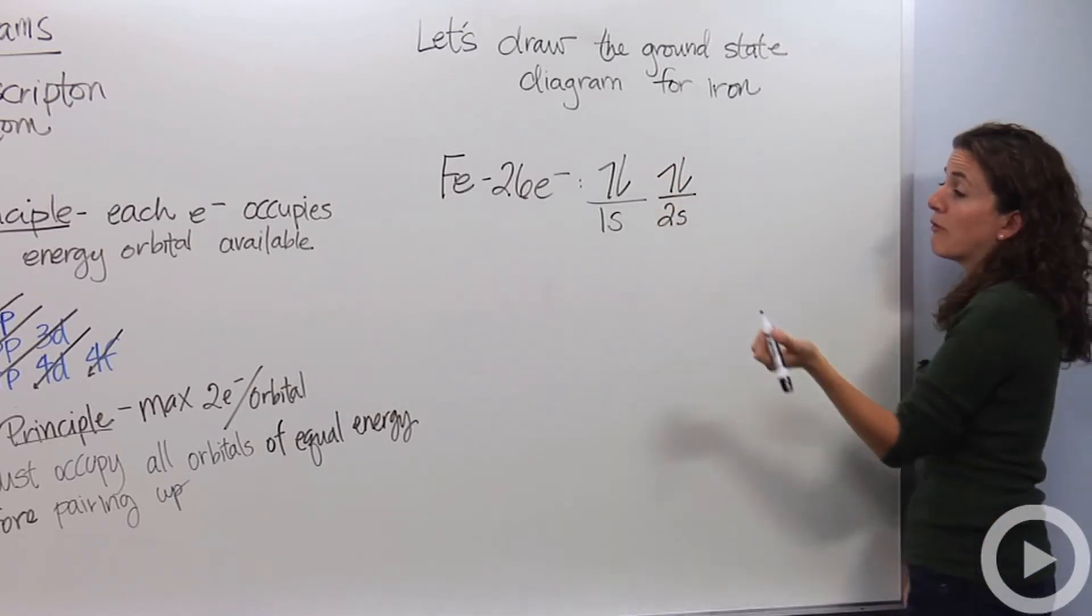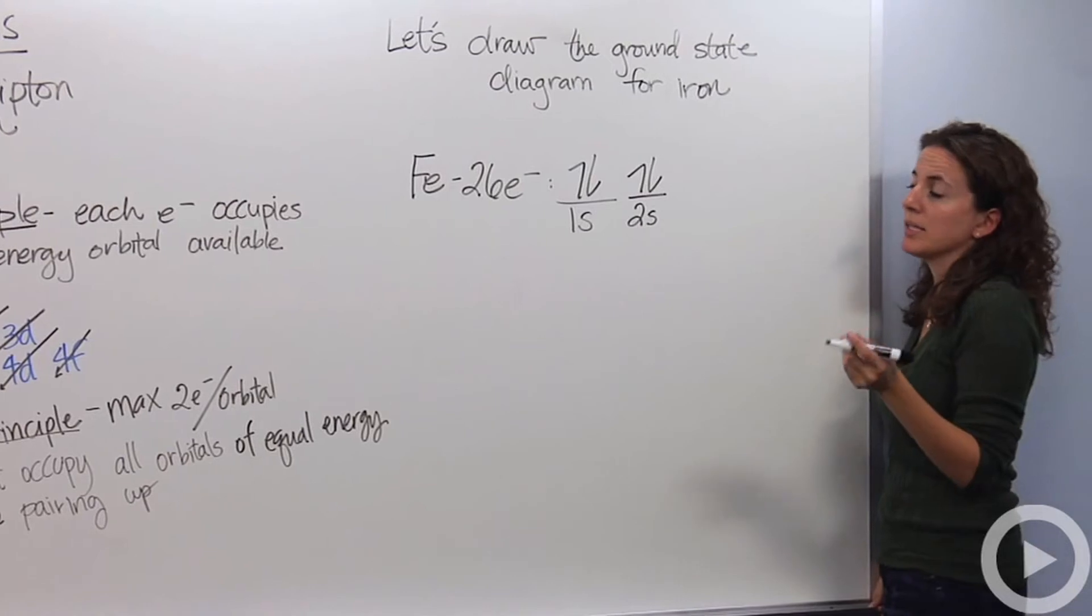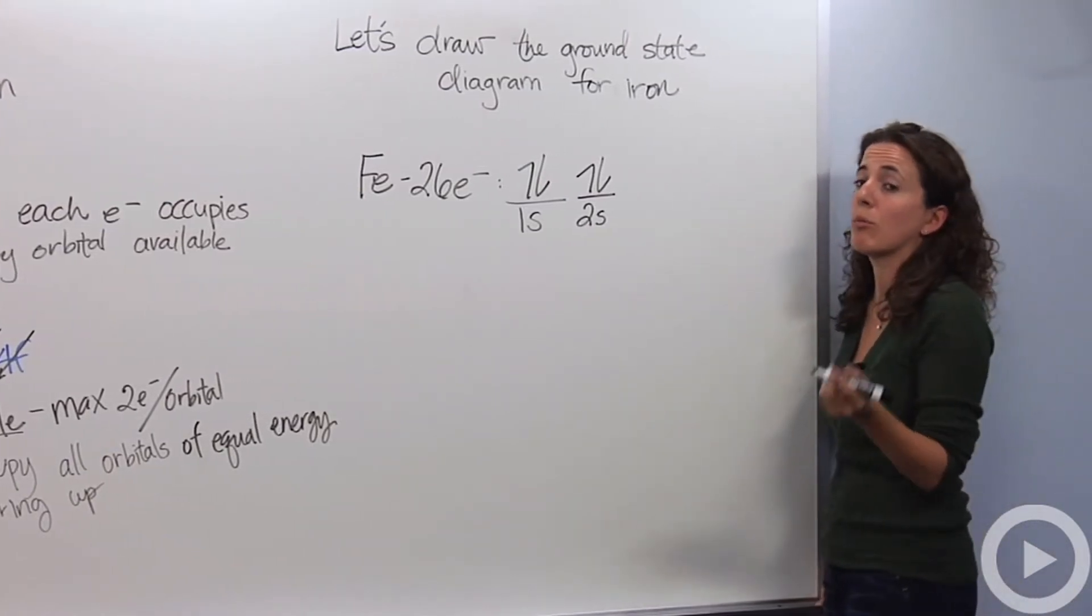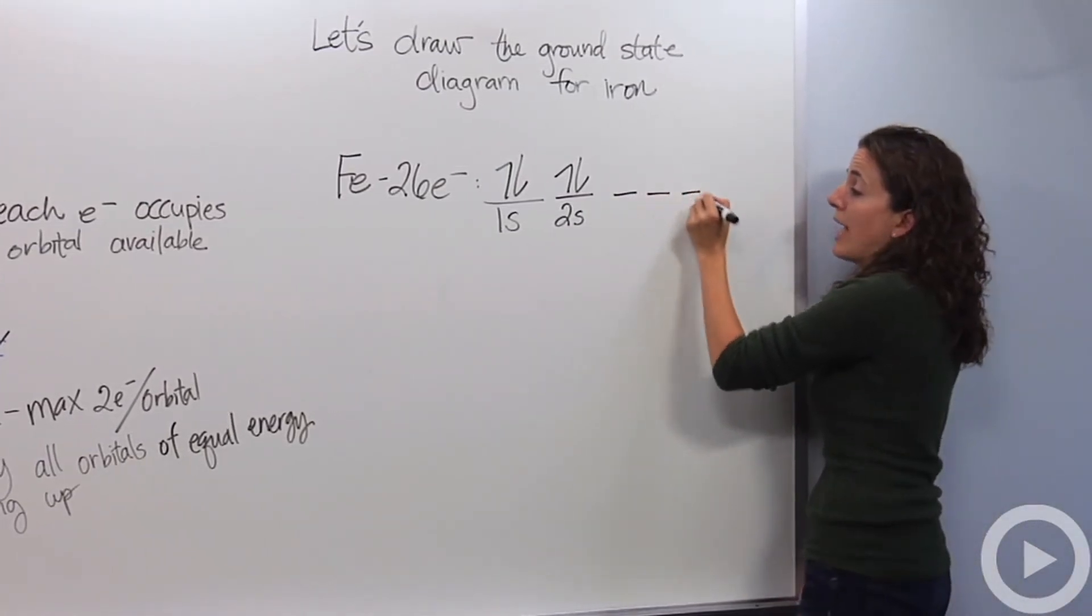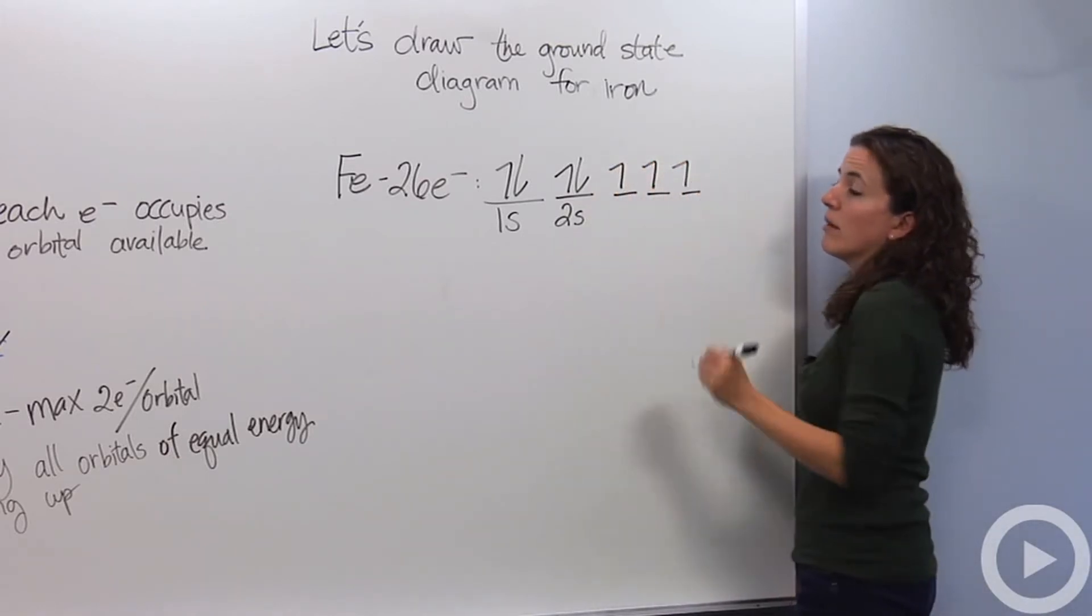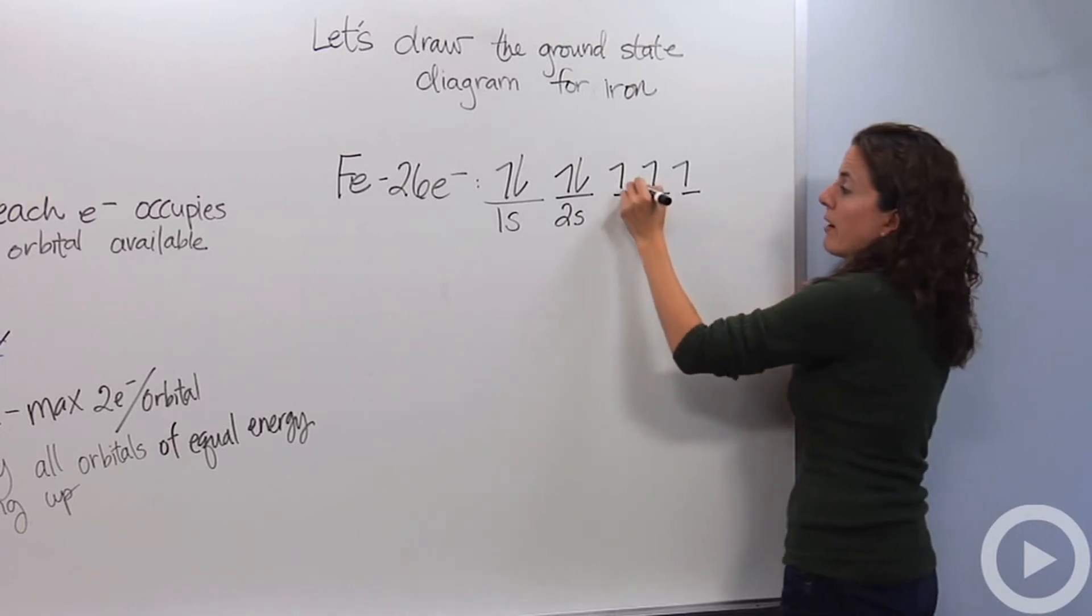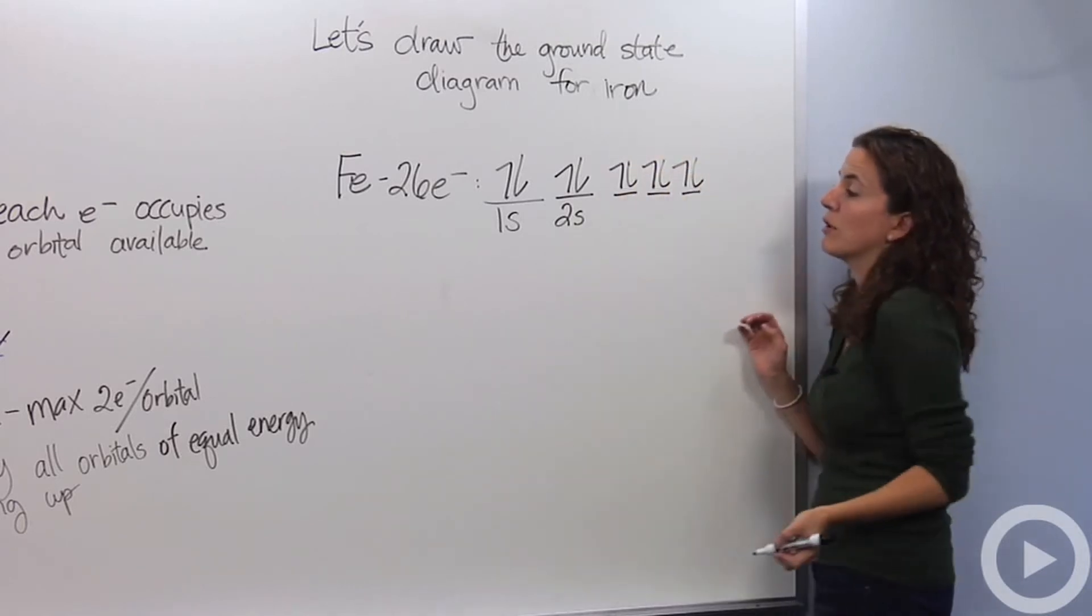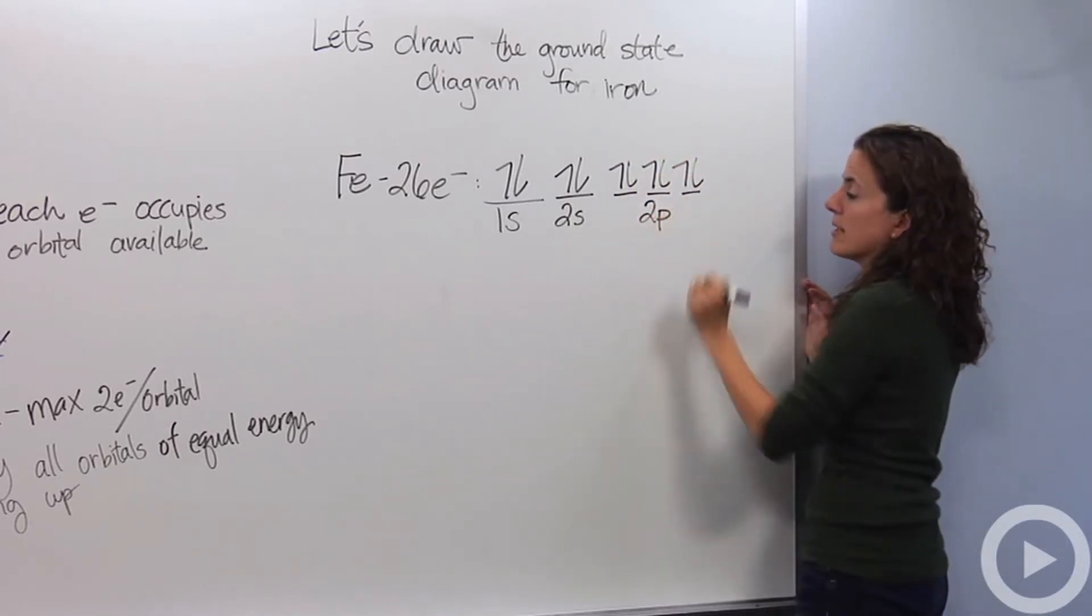Two electrons are going to go in there as well. Then you have the 2p and don't forget the p sub-level has three orbitals. So we're going to draw three dashes indicating the 2p sub-level. And the electrons are going to go in all of them first before pairing up. So right now we have a total of 10 electrons.